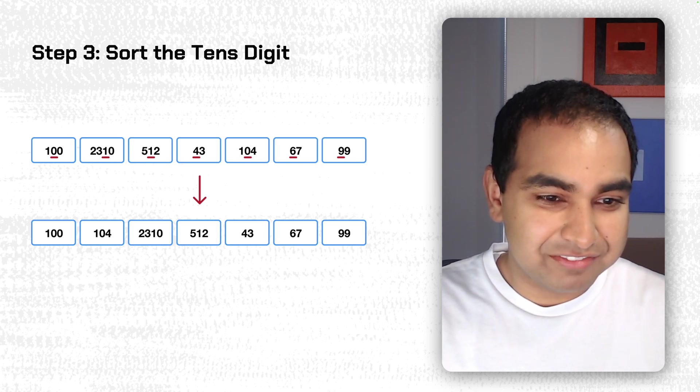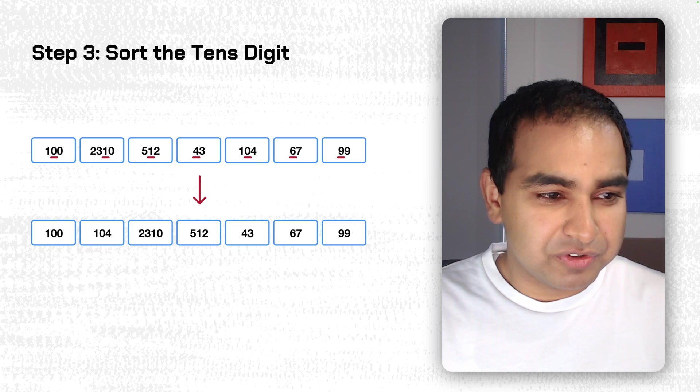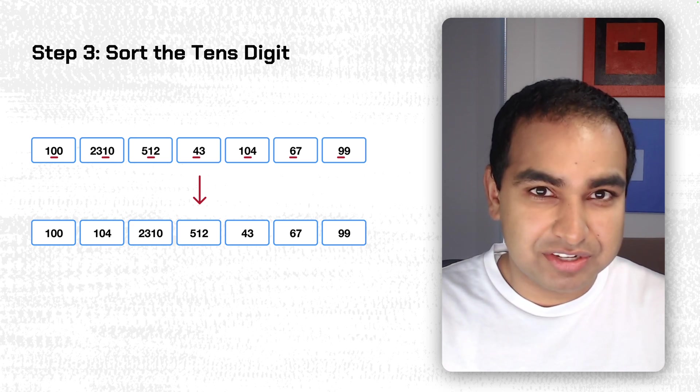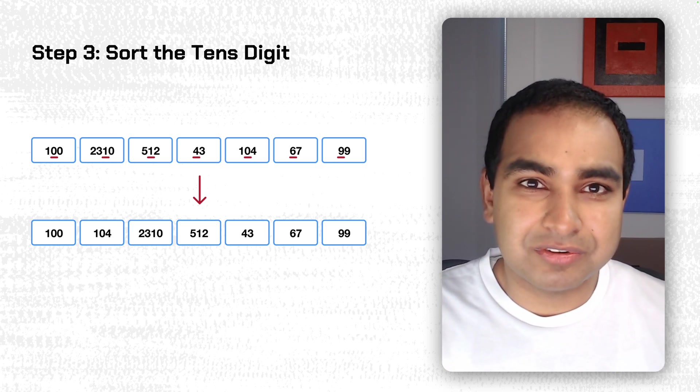the output array is now going to be 100, 104, 2310, 512, 43, 67, 99. And if you look at it, the 10s digit number in the sorted array is 0, 0, 1, 1, 4, 6, and 9, which is, of course, also sorted.